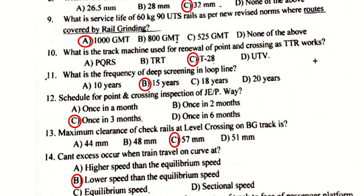The track machine used for renewal for points and crossings as TTR works is T28. The frequency of deep screening in loop lines is 15 years. The schedule for point and crossing inspection by JE P-Way is once in three months.